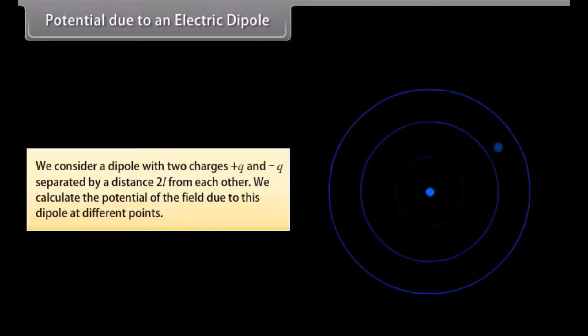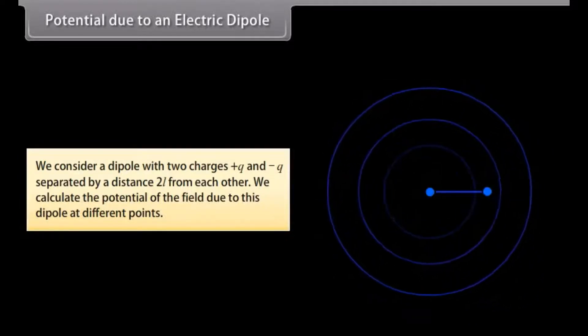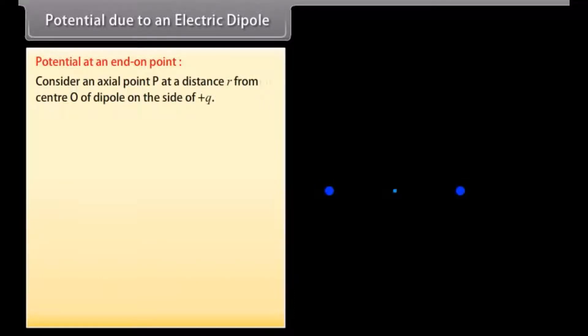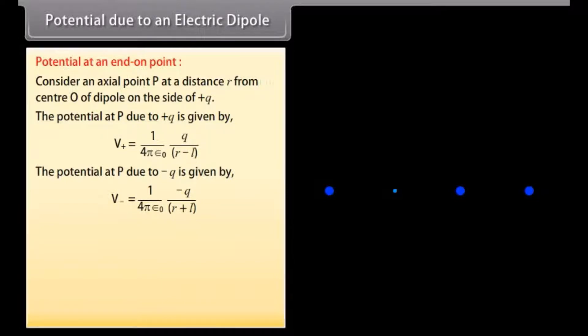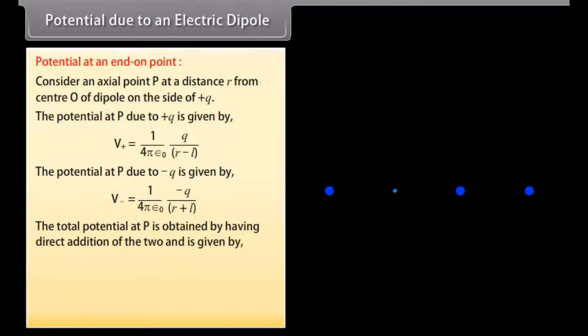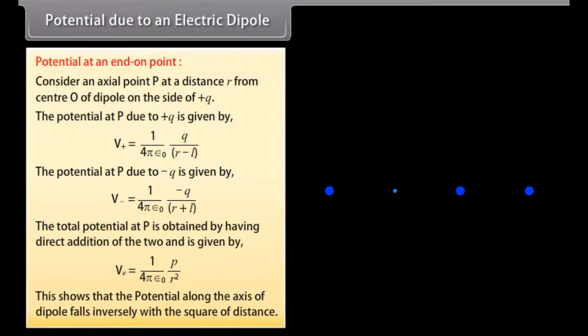Potential due to an electric dipole: Consider a dipole with two charges plus Q and minus Q separated by a distance 2L. Potential at an end-on point: Consider an axial point P at a distance R from the center O of the dipole on the side of plus Q. The potential at P due to plus Q is V positive equals one upon four pi epsilon naught multiplied by Q upon R minus L. The potential at P due to minus Q is V negative equals one upon four pi epsilon naught multiplied by minus Q upon R plus L. The total potential at P is VE equals one upon four pi epsilon naught multiplied by P upon R squared. This shows that the potential along the axis of a dipole falls inversely with the square of distance.